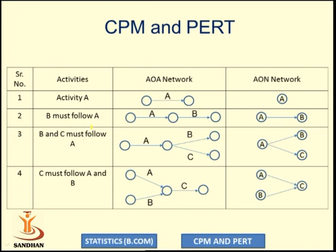Activities B and C are the successors and A is a predecessor. In an AON network diagram, the corresponding activities are denoted on a node. C must follow A and B.